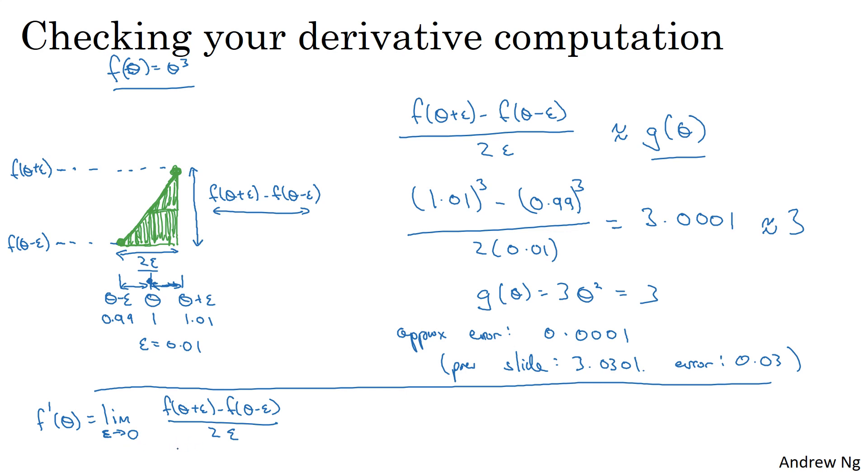And it turns out that for a non-zero value of epsilon, you can show that the error of this approximation is on the order of epsilon squared. And remember, epsilon is a very small number. So if epsilon is 0.01, which it is here, then epsilon squared is 0.0001. The big O notation means the error is actually some constant times this, but this is actually exactly our approximation error. So the big O constant happened to be 1.